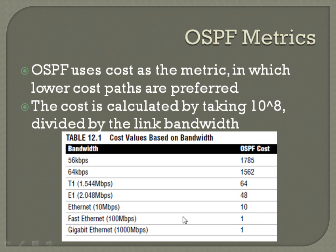If you go up beyond that — dividing 100 million by one billion — the cost is still set to one because it's always going to be an integer value. You can specifically configure interfaces faster than fast Ethernet or gigabit Ethernet to carry a different cost. But if you haven't configured that, once you get to fast Ethernet and beyond, the OSPF cost is always going to be one.